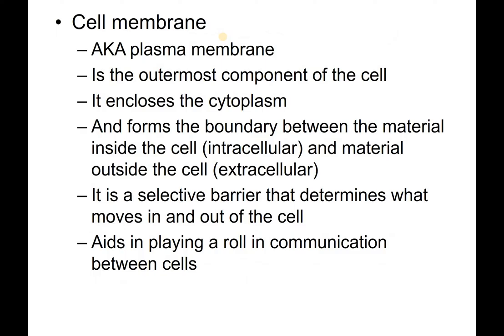The cell membrane, also known as the plasma membrane, is the outermost component of the cell. It also has a name called the phospholipid bilayer — so know those three: cell membrane, plasma membrane, and phospholipid bilayer. It encloses the cytoplasm, giving us intracellular, meaning inside the cell, and extracellular, meaning outside the cell. The cell needs to protect itself by only allowing certain things in, making it a selective barrier that determines what moves in and out.